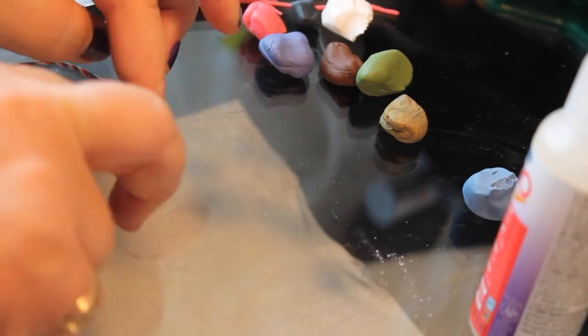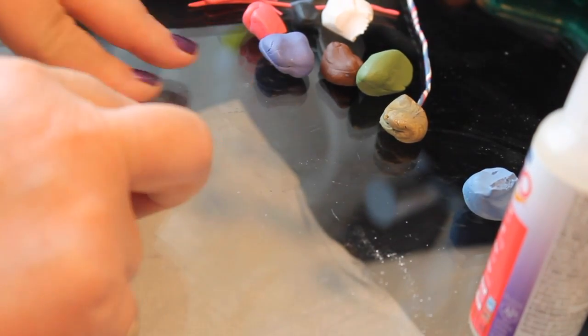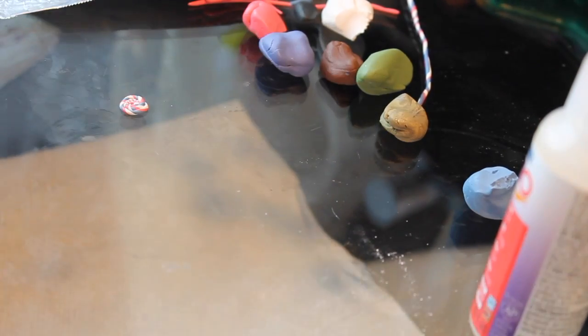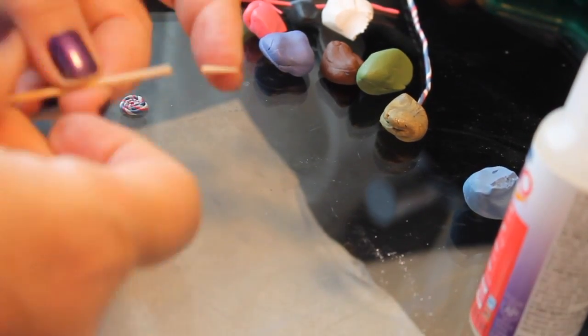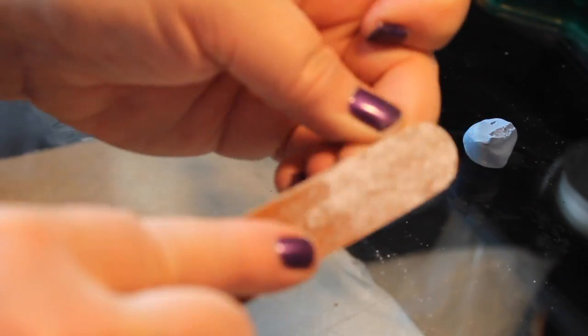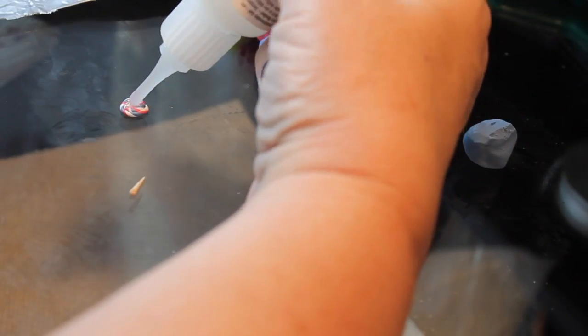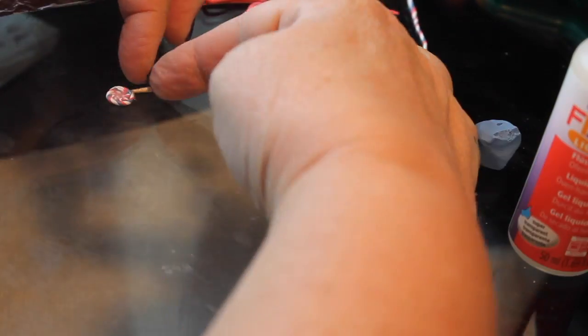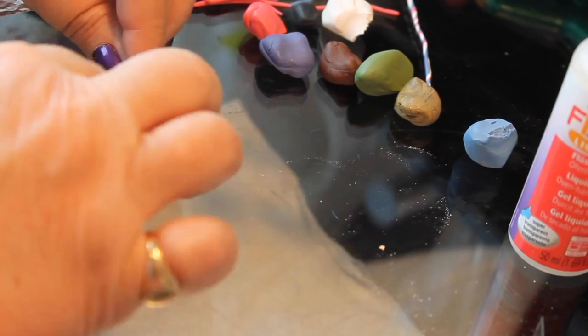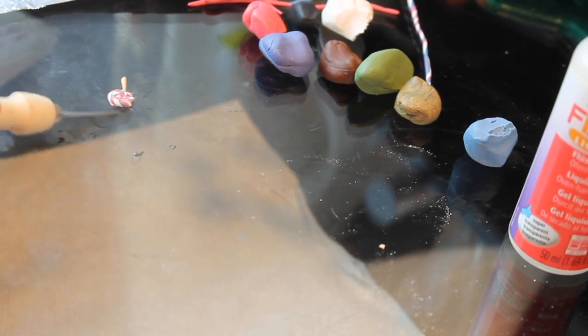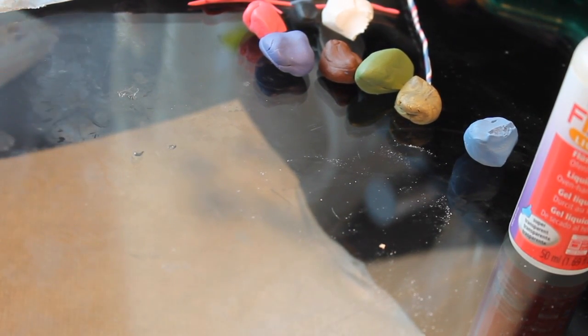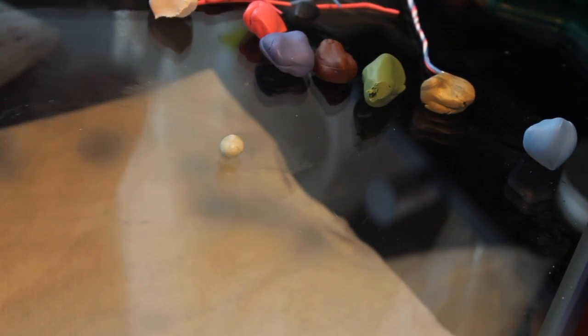I've decided since I already had this swirl made that I would go ahead and make another one of these. So basically the same process. This Primo Sculpey bakes at 275 for 30 minutes. It's a little firm, but the thing about it is it holds its shape better when you're moving it around.